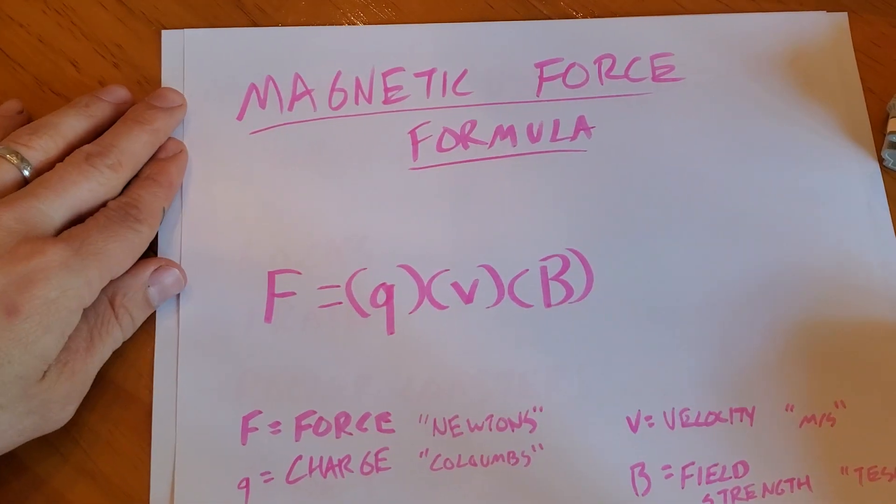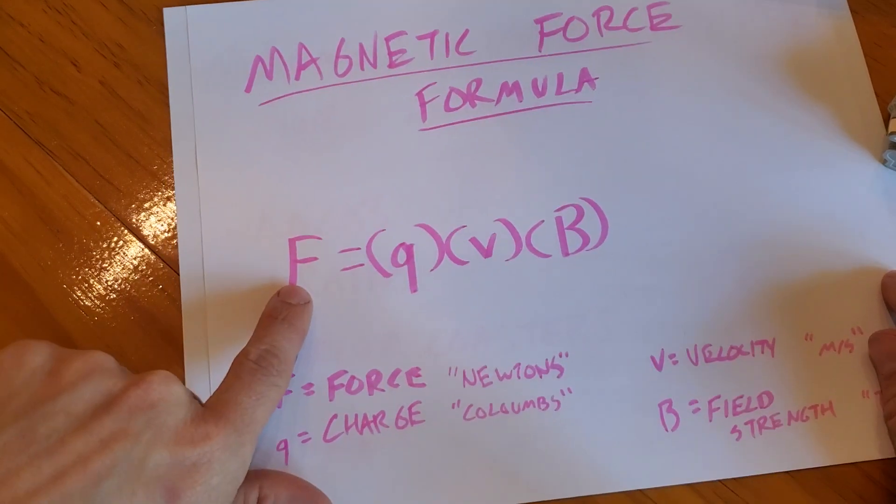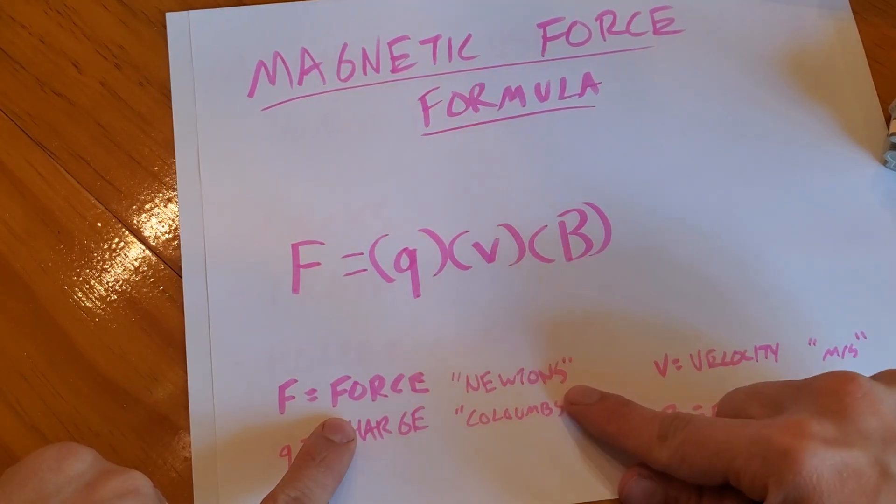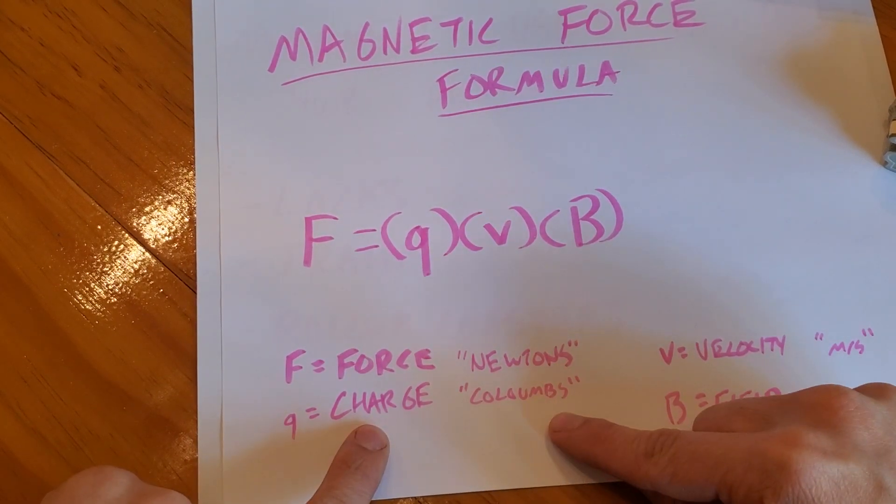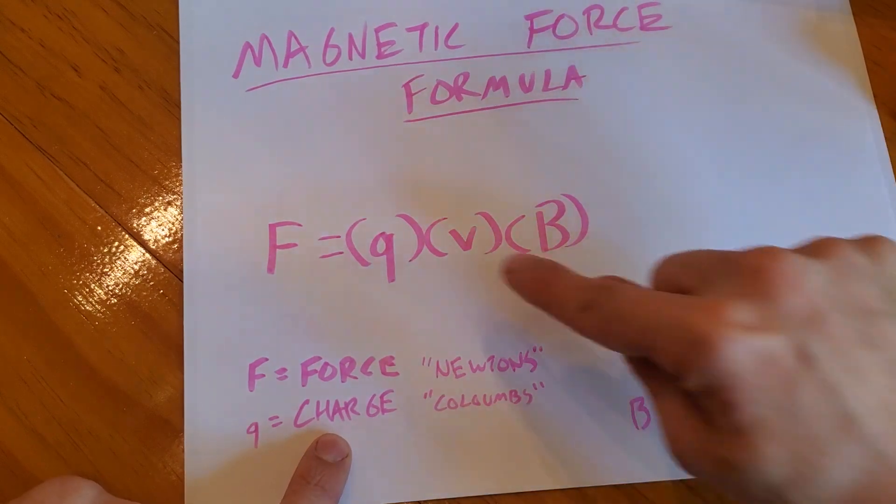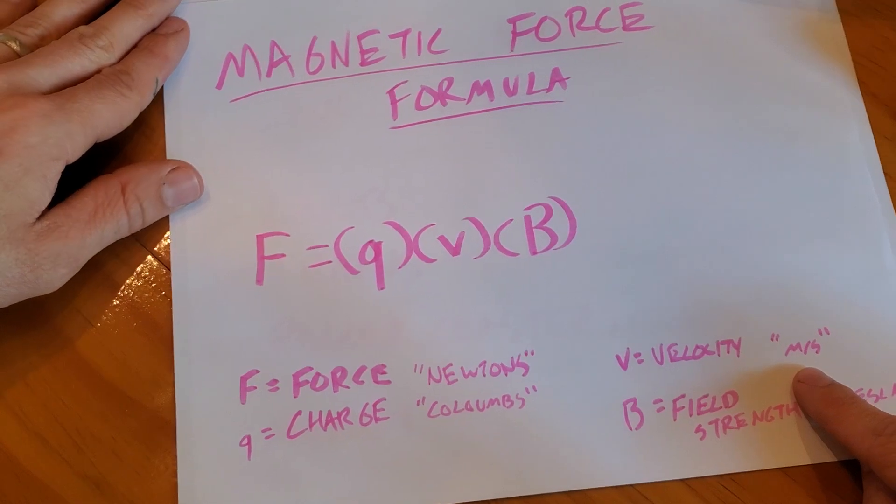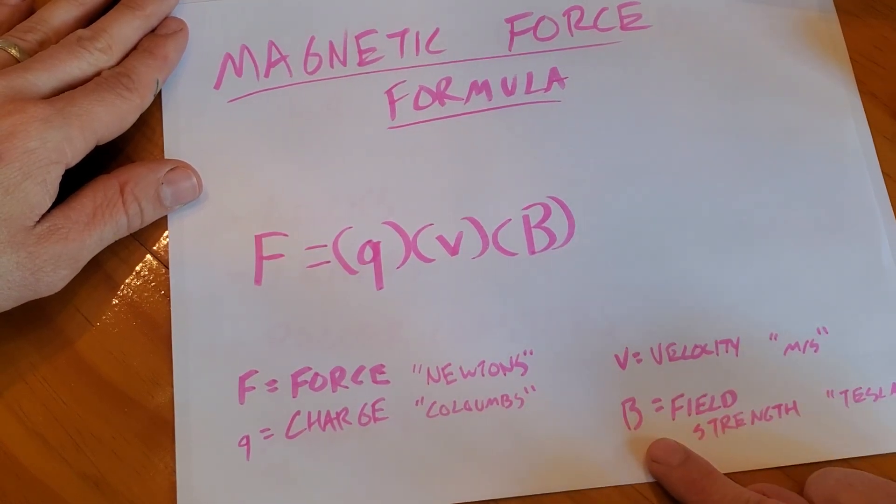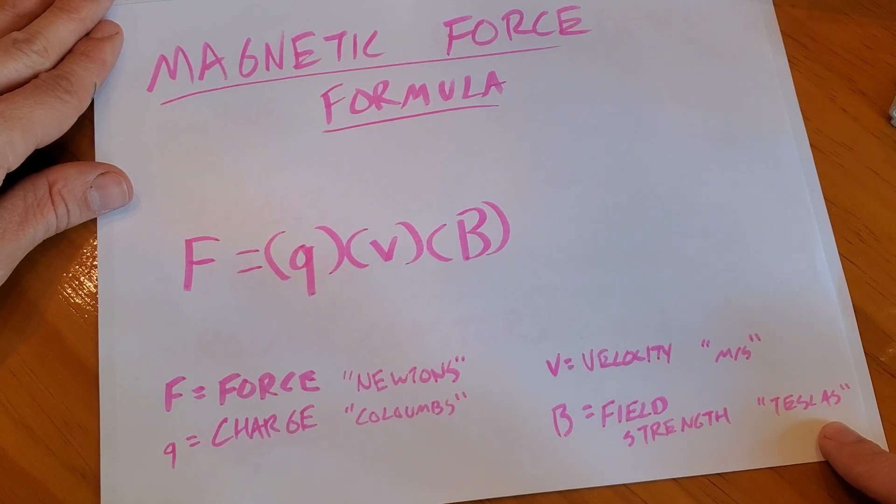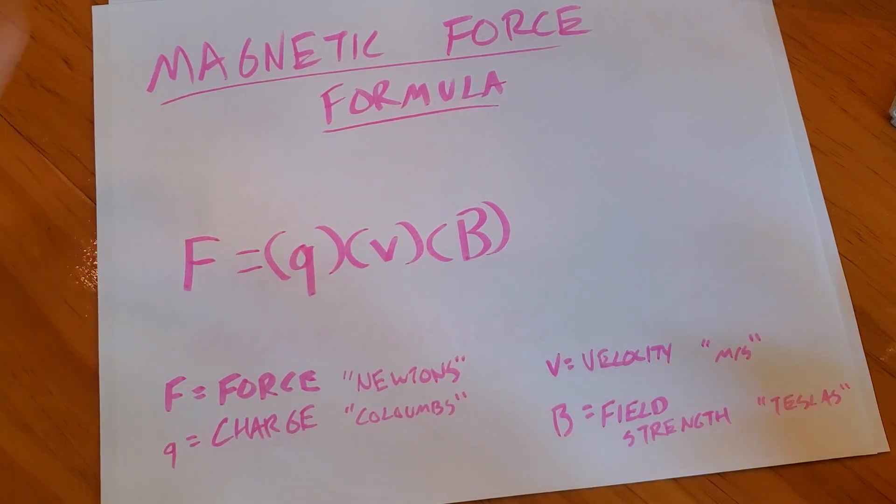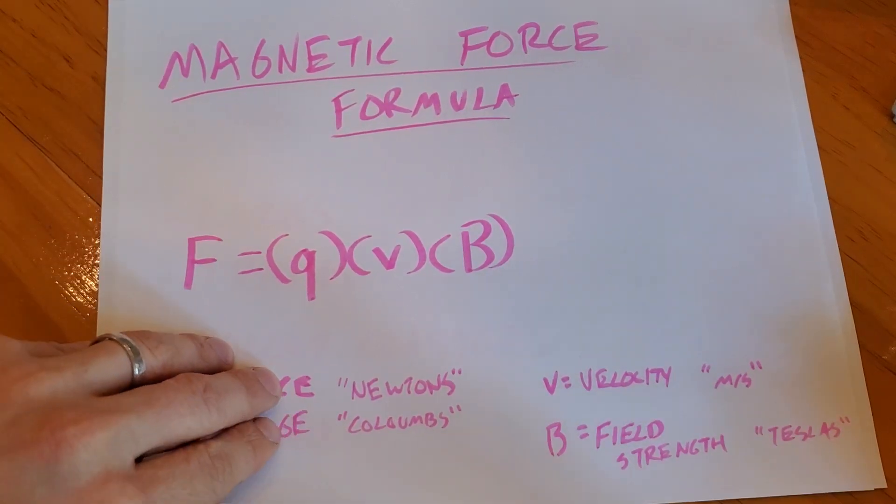We have a magnetic force formula here, a little bit of math. F equals Q times V times B. F force, what's our unit for that? The Newton. Q going back to electricity, Q is charge. Our unit for that is a coulomb. V velocity going back to our very first unit of linear motion. Our unit is meters per second. And then B is something brand new. It stands for field strength. And our unit is Teslas like the car, which got its name from Nikola Tesla, the inventor.